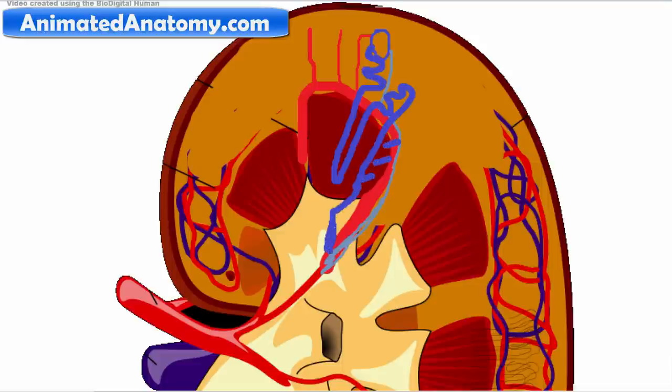And down there it's getting drained, everything that's filtered out of the blood. And in this process, when this, what's filtered out here, it's going through the proximal convoluted tubule, then the loop of Henle, and then back, and then the distal convoluted tubule.